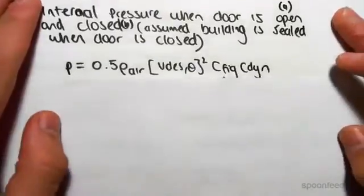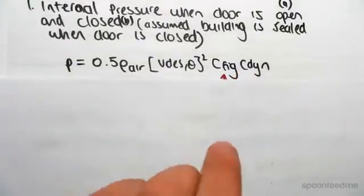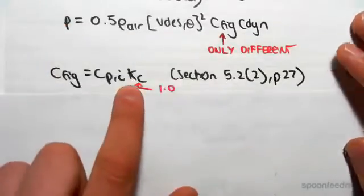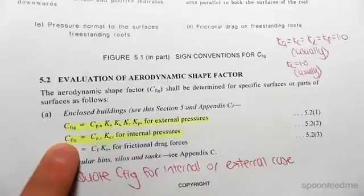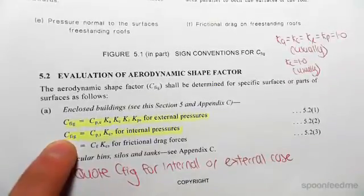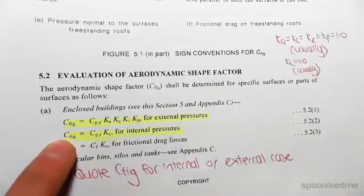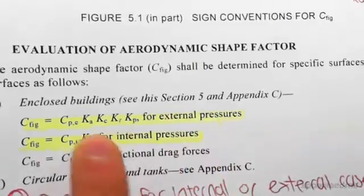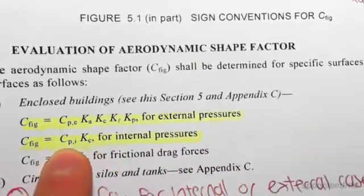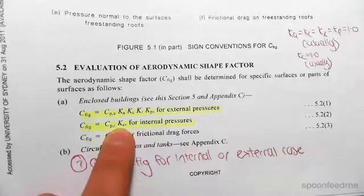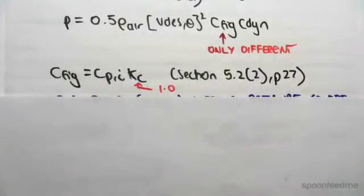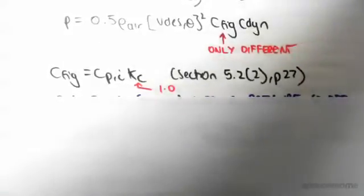Let's do it for the door open first. The pressure formula is the same, but the major difference is that C_fig is different. C_fig equals C_pi times K_c. This comes from page 27. We have two separate things for K_c. For external pressures — windward, leeward, sidewalls and roof — we've been using one approach, but for internal pressures it changes to C_pi and K_c. K_c is a combination factor, and we've said that equals one.